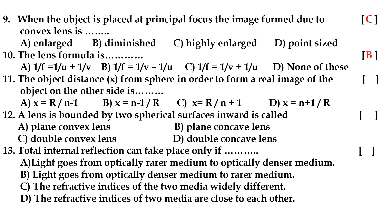Tenth question: the lens formula is option B: 1/f = 1/v − 1/u. Eleventh question: the object distance x from a sphere in order to form a real image on the other side is option A: x = R / (n − 1), where R means radius of curvature and n is the refractive index.